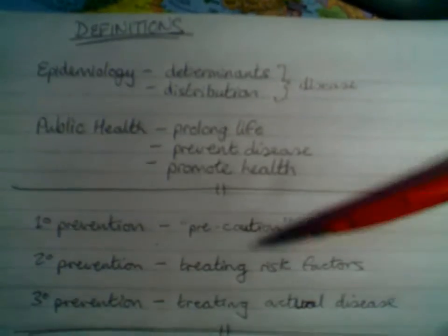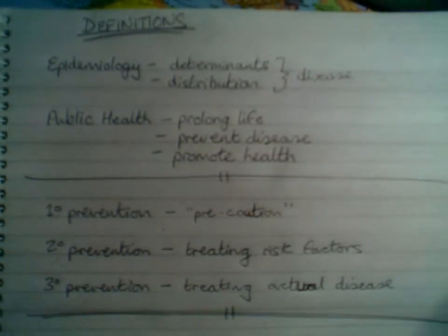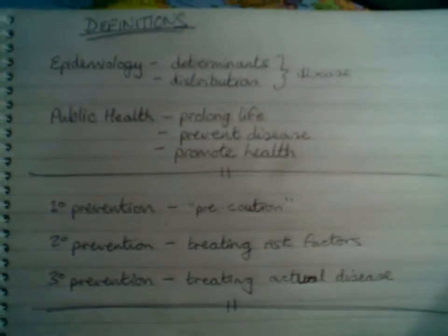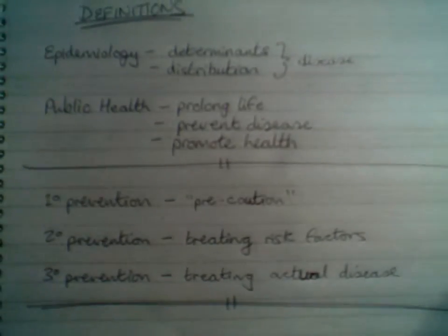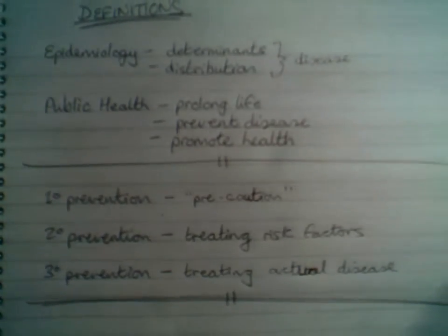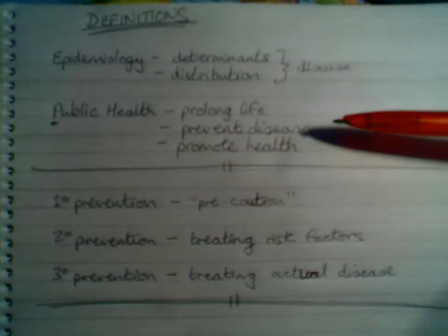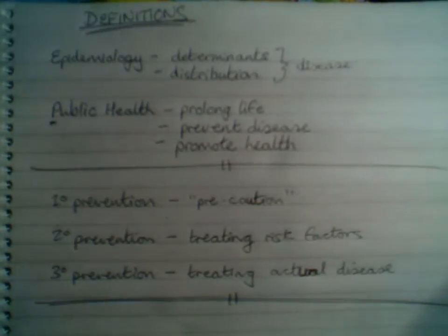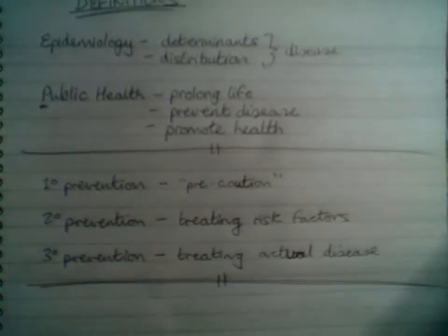Some simple definitions: you'll often hear people in medicine talking about epidemiology and public health. Epidemiology is the study of the determinants and distribution of disease — the three D's, nice and easy to remember. Public health is all about the three P's: it's the science of prolonging life, preventing disease, and promoting health. Just cool definitions, nice and easy to remember to stop us getting confused.